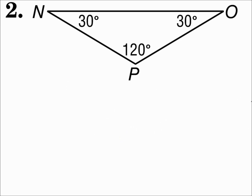Look at number two. Number two has one obtuse angle, and so it's an obtuse triangle. If it has one obtuse angle, it's an obtuse triangle.